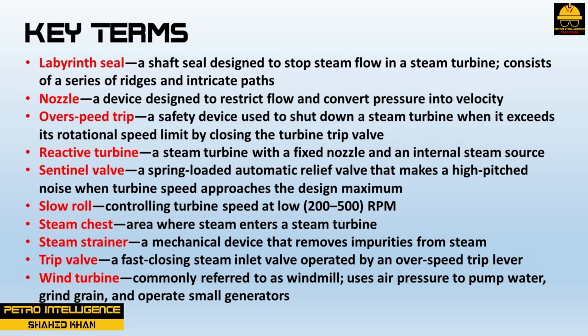Overspeed trip is a safety device used to shut down a steam turbine when it exceeds its rotational speed limit by closing the turbine trip valve. Reactive turbine is a steam turbine with a fixed nozzle and an internal steam source. Sentinel valve is a spring-loaded automatic relief valve that makes a high-pitched noise when turbine speed approaches the design maximum. Slow roll is controlling turbine speed at low 200 to 500 RPM. Steam chest is the area where steam enters a steam turbine. Steam strainer is a mechanical device that removes impurities from steam. Trip valve is a fast-closing steam inlet valve operated by an overspeed trip lever. Wind turbine, commonly referred to as a windmill, uses air pressure to pump water, grind grain, and operate small generators.